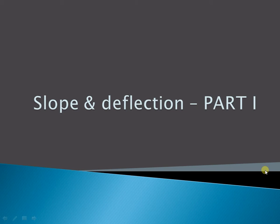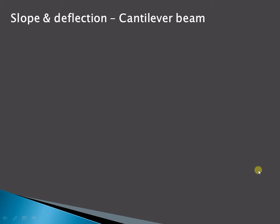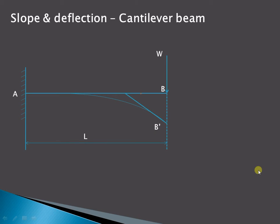Let us start to understand what is the meaning of slope and deflection in case of a cantilever beam. As shown here, we have a cantilever beam subjected to a point load W at the free end. Because of this load, there is a deflection of the beam. From point B dash we have drawn a tangent making an angle theta — this is the slope — and the distance B to B dash is the deflection of the beam.